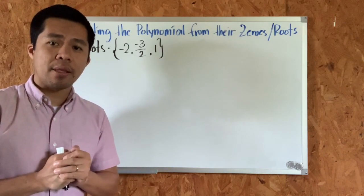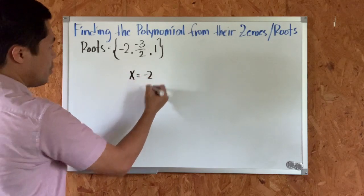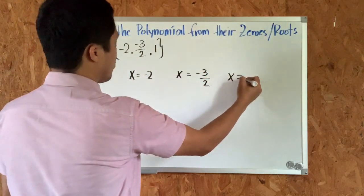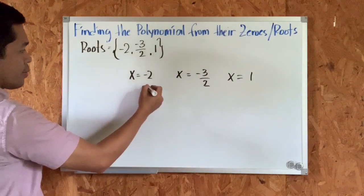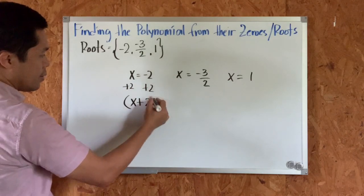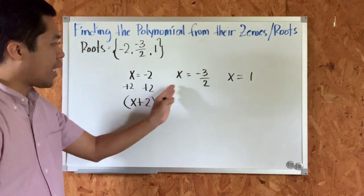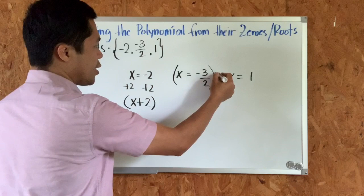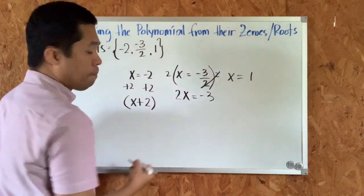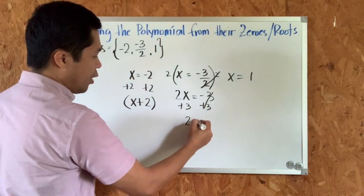Let's convert these three roots into binomials. We have x equals negative two, x equals negative three over two, and x equals one. For x equals negative two, we add two on both sides to get x plus two. Since the second root is a fraction, we multiply the equation by the denominator two, giving us 2x equals negative three, then adding three on both sides gives 2x plus three.